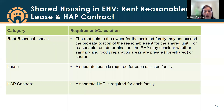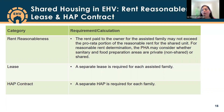A key requirement is that there needs to be a separate lease for each assisted family. There is also a separate HAP contract for each family. Even in cases where two EHV-assisted households decide to move into a unit together, they still need their own separate leases and separate HAP contracts for both.